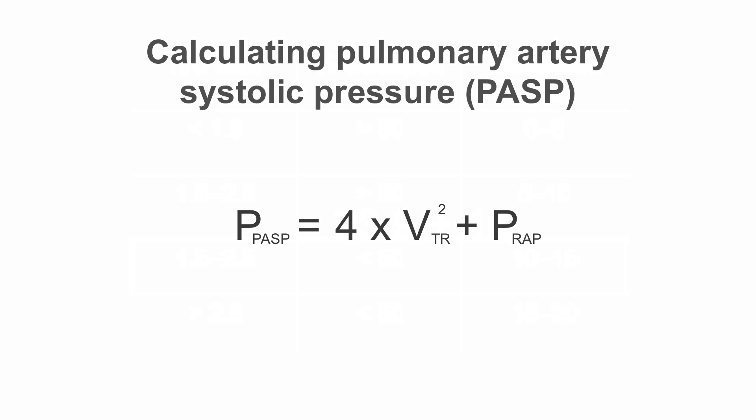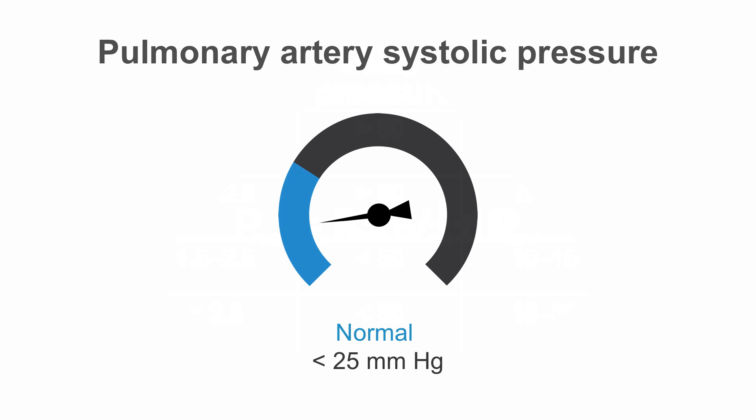Now we can go ahead and calculate the pulmonary artery systolic pressure. We can either use 10 or 15 as the right atrial pressure estimate, or an average between the two of 12.5. For simplicity, let's use 10 millimeters of mercury. We add these together and get 43.9. A normal pulmonary artery systolic pressure is less than 25 millimeters of mercury.